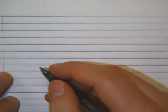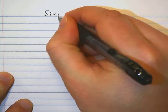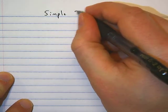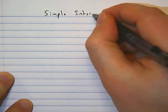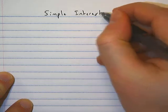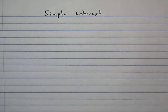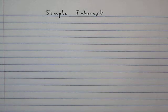In our last video we went over how to find simple interest by using the formula, and in both examples we were given the principal, rate, and time. Today we're going to look at three examples where we're given a different combination of variables and we'll find the missing one.